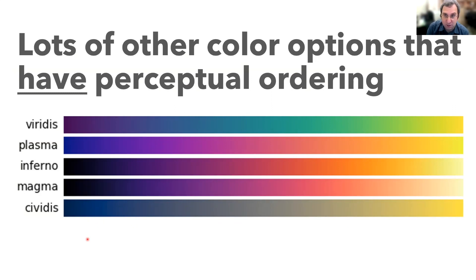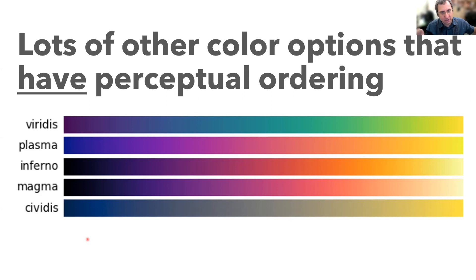Plus, there are plenty of other options with color that do have perceptual ordering — these are just a few examples. You can just look up color maps; there are all kinds. There are two-color color maps where if you're trying to show positive and negative things in different spectrums, there's a bunch of ways to do it. This is just sort of a cautionary tale — don't just use a default.